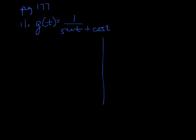Quotient rule: derivative of the top - the derivative of 1 is 0 - times the bottom, sine t plus cosine t. Minus the derivative of the bottom, so I have the derivative of sine which is cosine and the derivative of cosine which is negative sine, times the top.